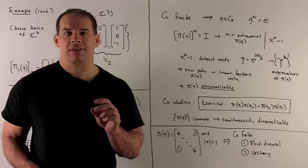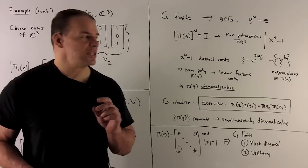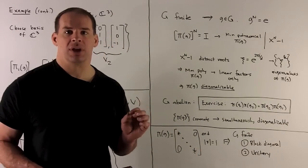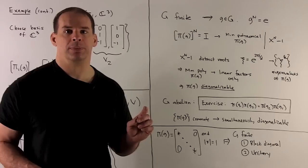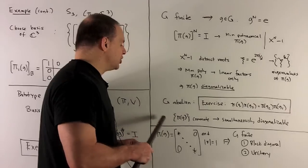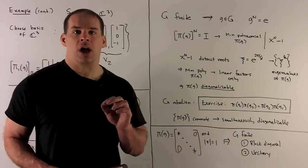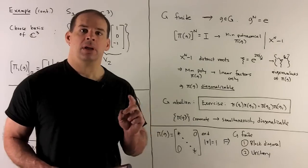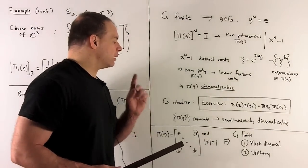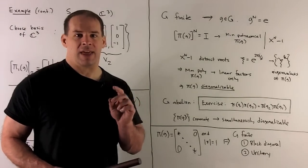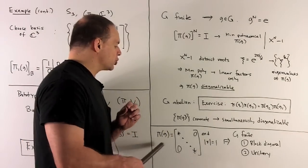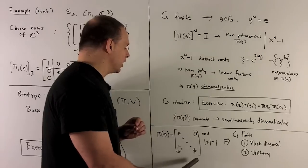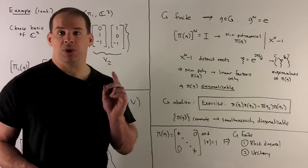Let's make use of the abelian property. Exercise: show that for G abelian, π(g₁)π(g₂) = π(g₂)π(g₁). With that, the set of all our π(g) is going to be a set of commuting matrices. Since they're all diagonalizable, they're going to be simultaneously diagonalizable. So if G is finite abelian and we have a finite-dimensional representation, then there's going to be a basis that puts all of our matrices in diagonal form simultaneously, and all of our diagonal entries are going to be roots of unity, giving us unitary matrices.